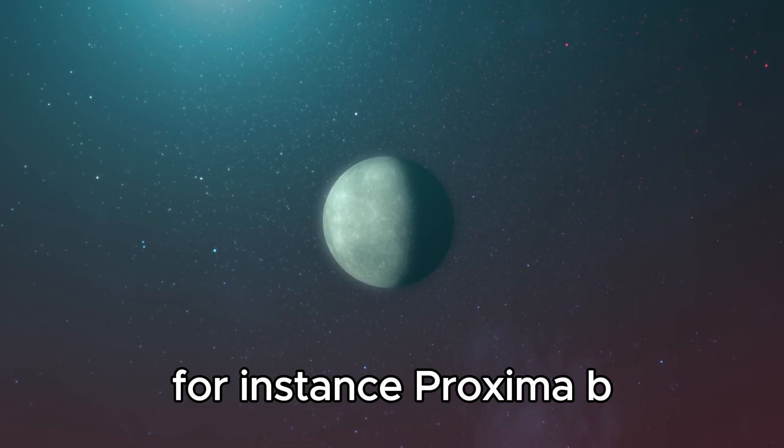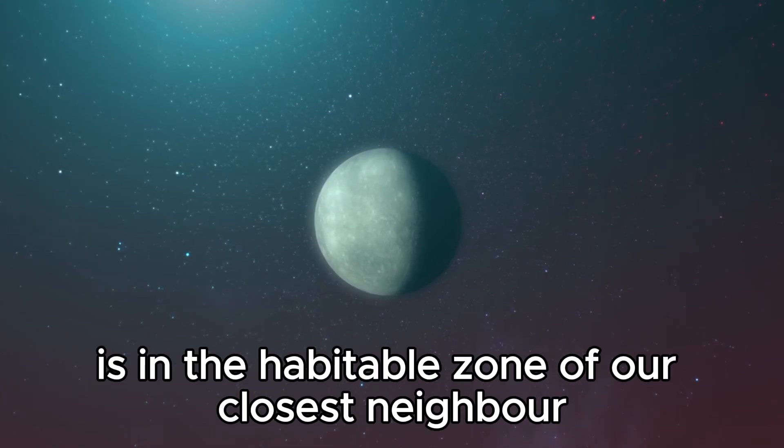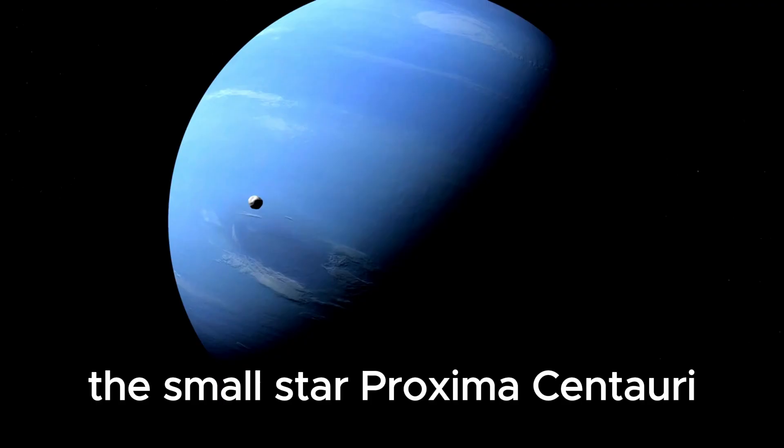The question was whether in the future our telescopes could detect artificial light on another planet. For instance, Proxima B, the nearest exoplanet to Earth, is in the habitable zone of our closest neighbor, the small star Proxima Centauri,